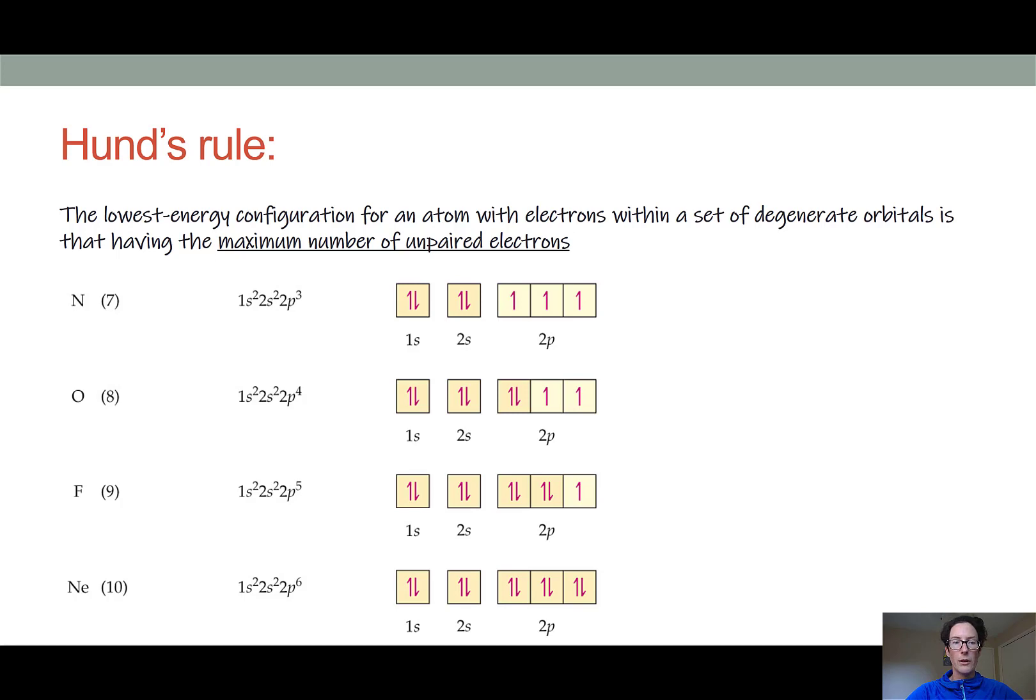When we add more electrons going further down the periodic table for oxygen, fluorine, and neon, those electrons will then occupy the remaining spaces within the 2p orbitals with a downward spin.